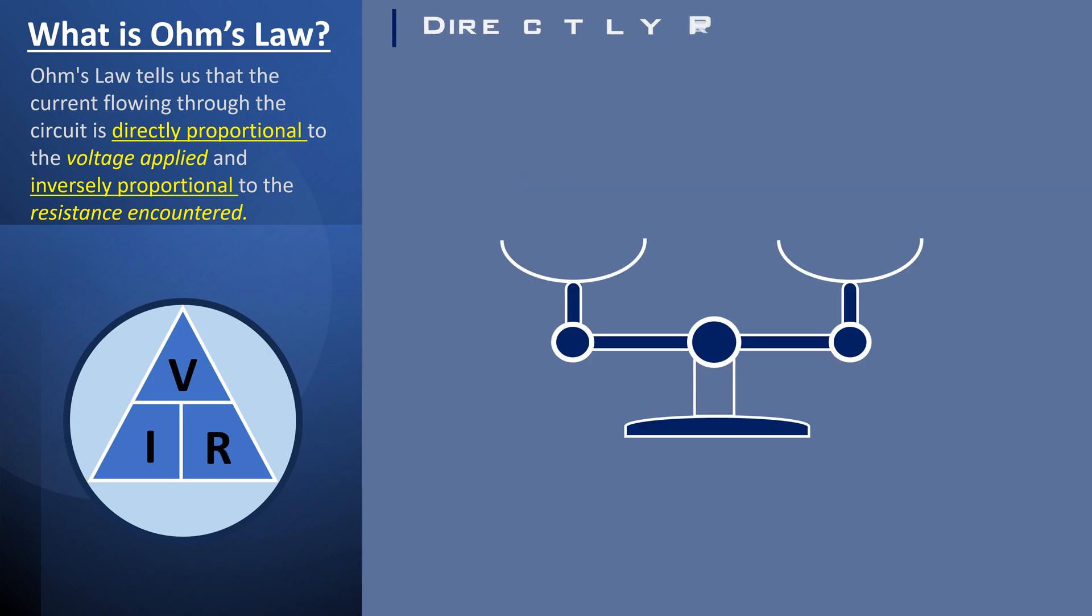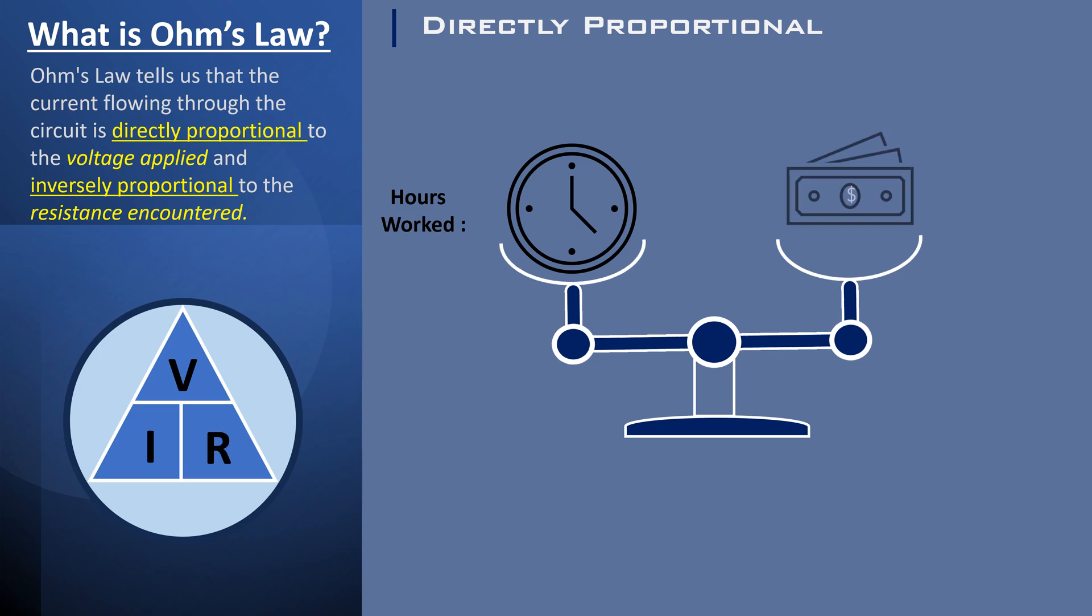In a real-life example, let's see how current is directly proportional to the voltage applied and inversely proportional to the resistance encountered. Consider comparing hours worked to the amount earned. As long as you are paid the same amount each hour, these two variables are considered directly proportional to each other. For instance,